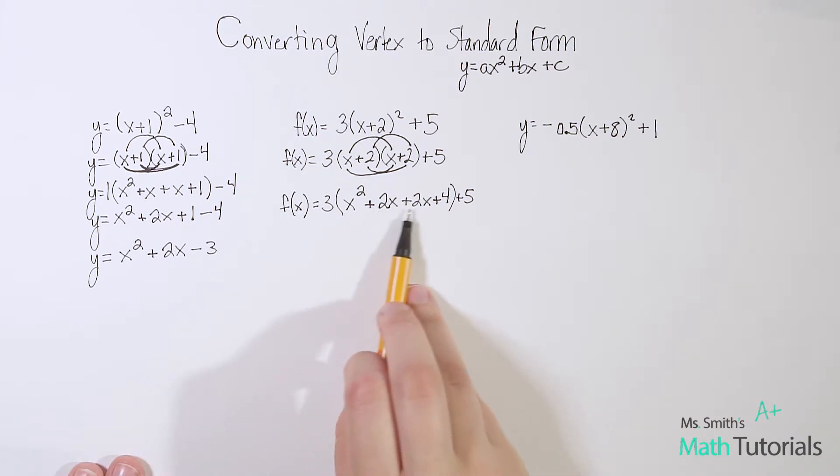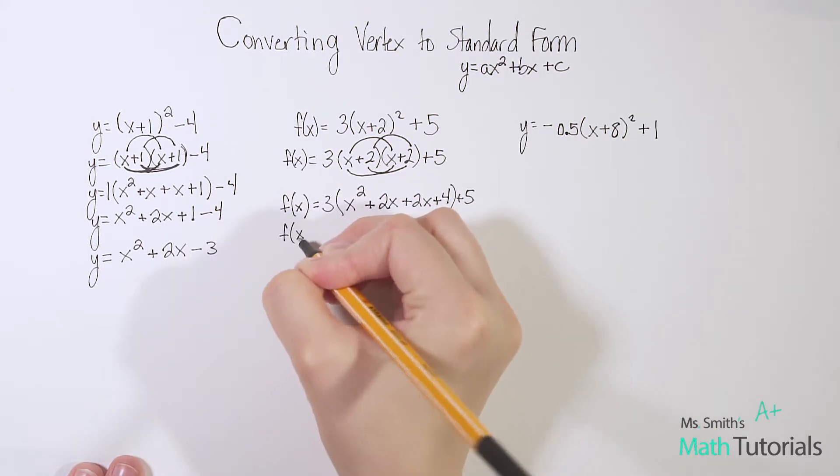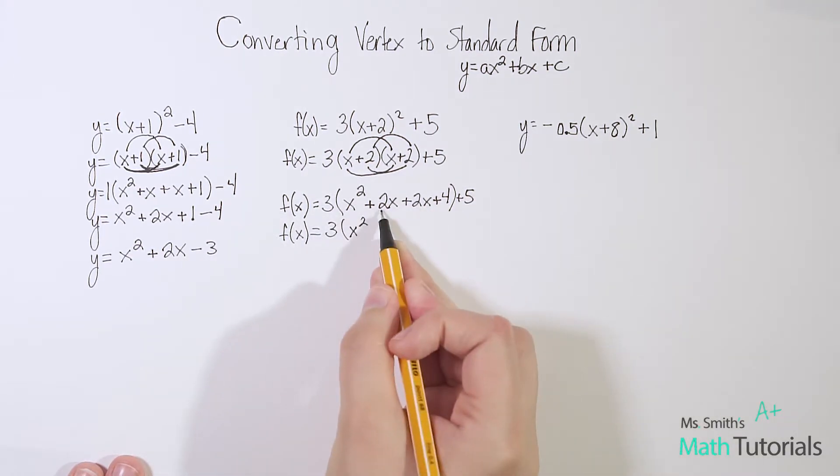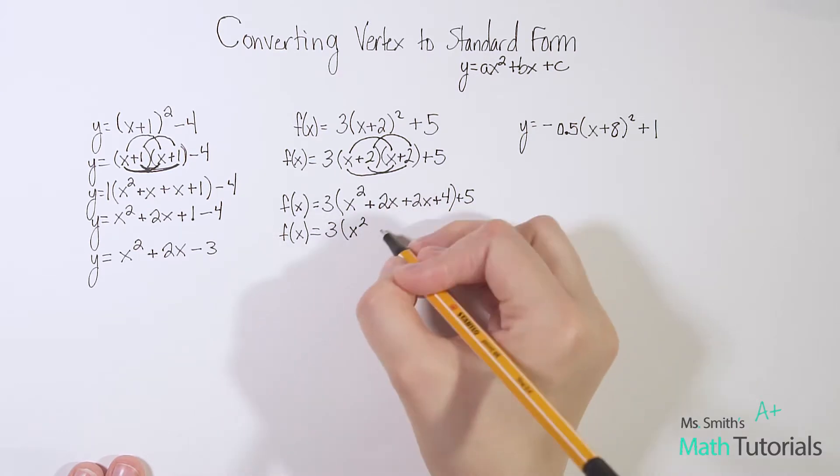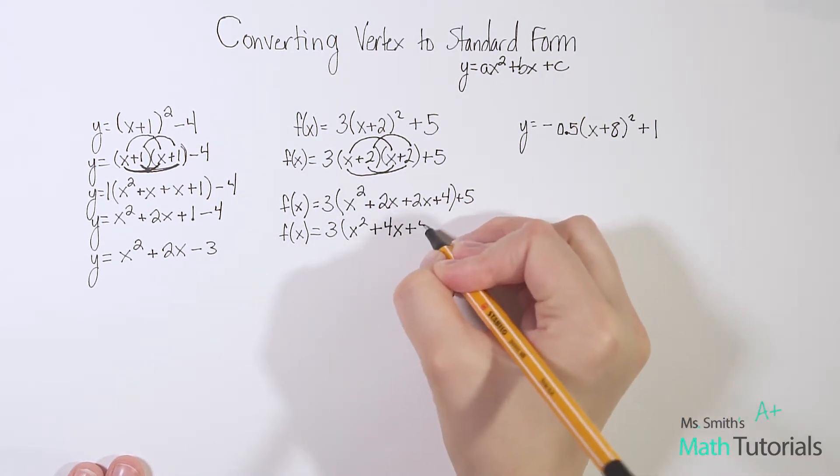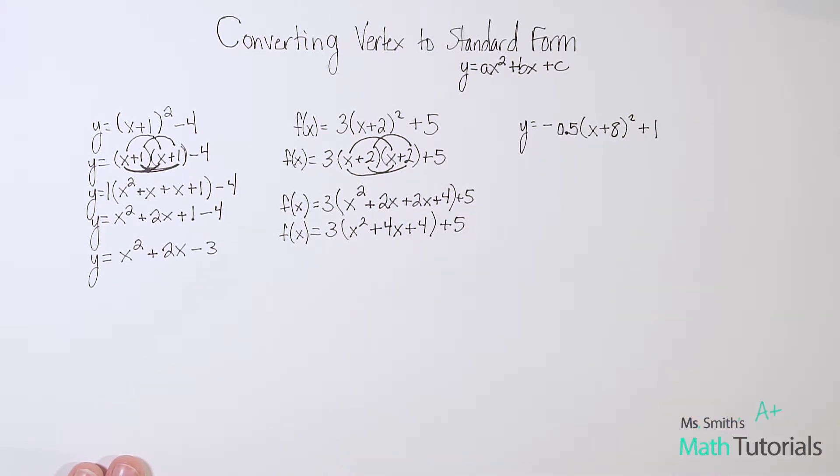Now, of course, I do want to go ahead and combine those like terms in the center there. I can go ahead and do that. Let's rewrite, combining those like terms. I've got 3 times (x² + 4x + 4). Now 2x + 2x, that's going to be 4x. Plus 4. And then I have this +5 hanging out on the outside.